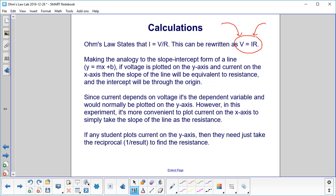Since current depends on voltage, it's actually the dependent variable and would normally be on the y-axis. However, we don't have to follow that rule. It's more convenient to plot current on the x-axis so we can simply take the slope of the line as the resistance.